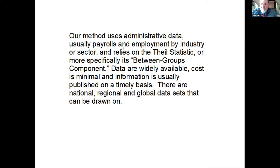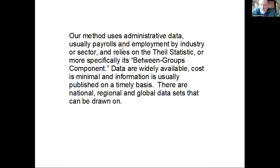The Theil T statistic is exceedingly easy to compute. It essentially measures inequality between any set of groups that are mutually exclusive and collectively exhaustive of whatever population you're attempting to measure. Inequality across groups is not inequality across individuals, but the more finely divided your group structure is, the closer you get to the individual level, and the more likely your measures will behave similarly to what you'd get from an accurate random sample or complete census. The accuracy converges very quickly to reliable micro-level data.